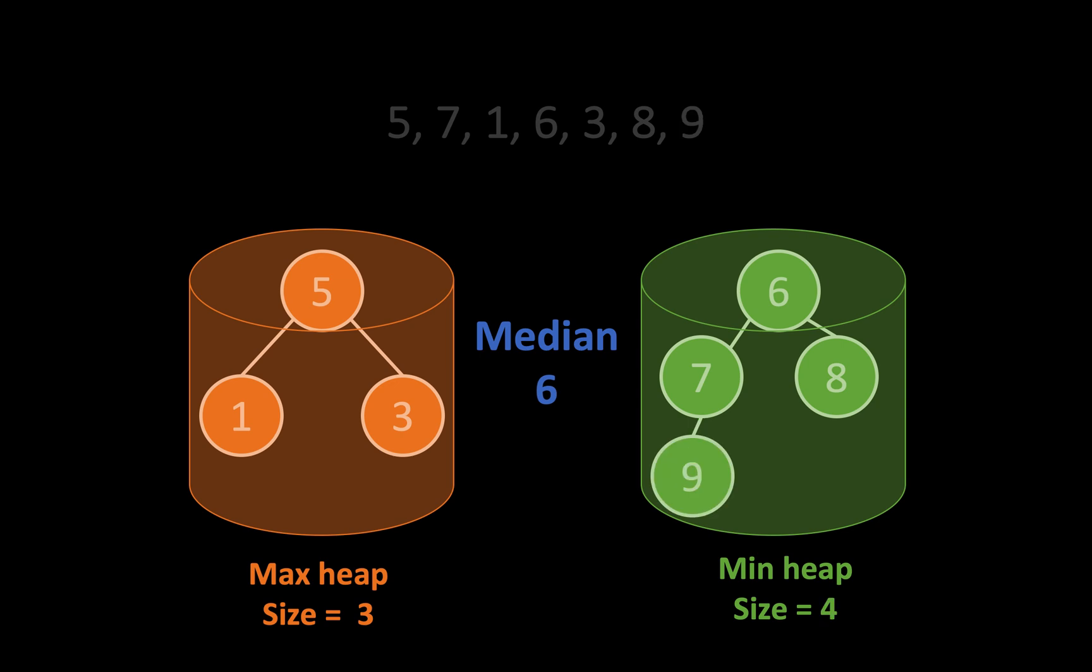Finally, we push 9 into the min heap. Because 9 is bigger than the root of the max heap, we don't push it there, we push it to the min heap. Because the min heap size is 4 and the max heap is only 3, we take the root of the min heap whose size is the biggest. So the median here is 6.